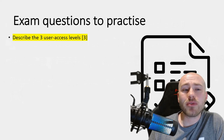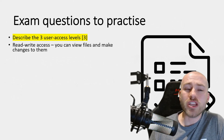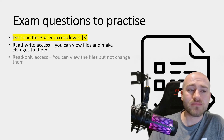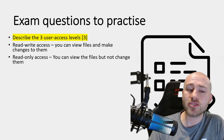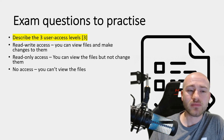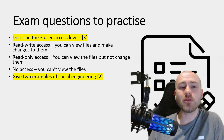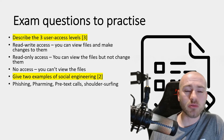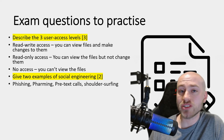Let's go through the answers. For three user access levels: read-write access, where you can view files and make changes; read-only access, where you can view files but can't make changes; and no access, where you can't view the files at all. For two examples of social engineering: phishing, pretext phone calls or blagging, or shoulder surfing.